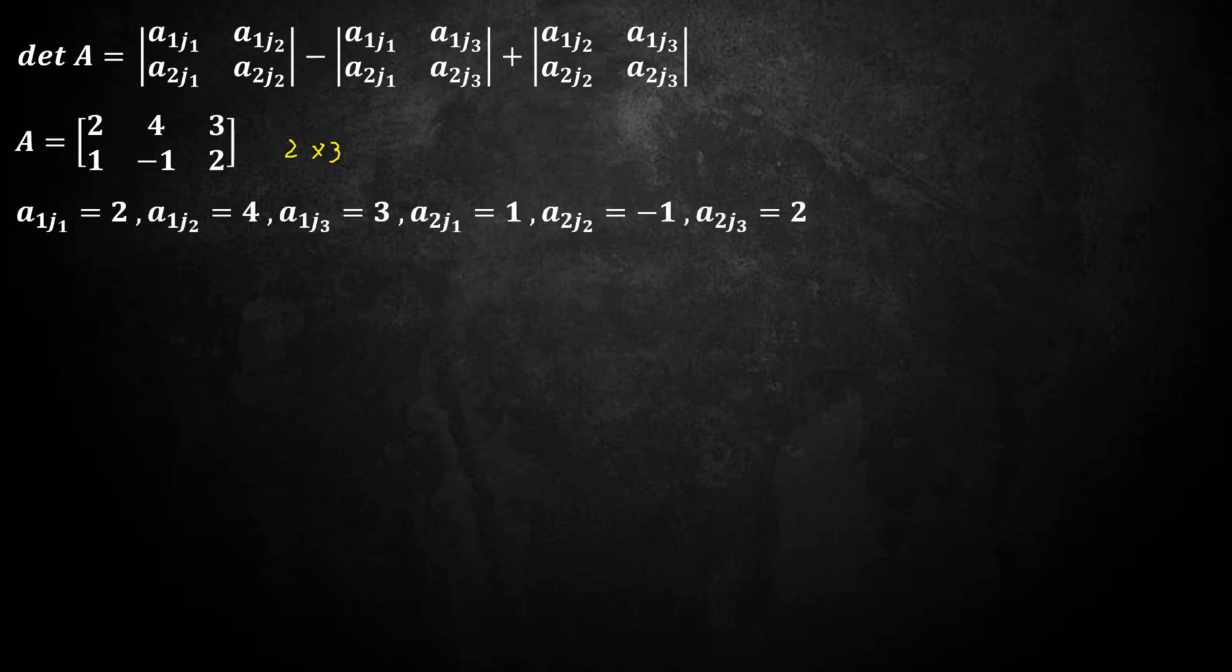Here a1j1 is equal to 2, a1j2 is equal to 4, a1j3 is equal to 3, a2j1 is equal to 1, a2j2 is equal to minus 1, a2j3 is equal to 2.